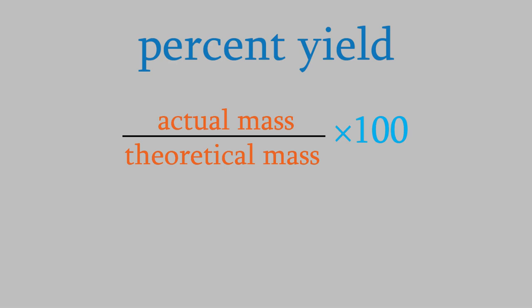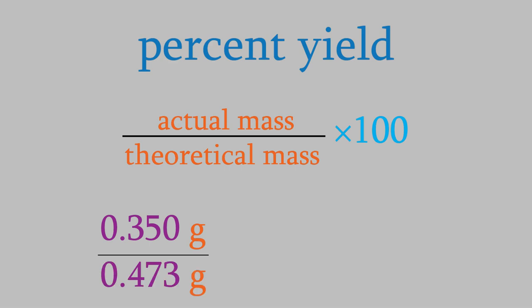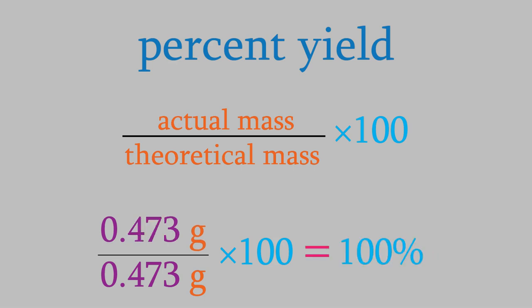In our case, we actually got 0.350 grams, so that's what goes in our numerator. Our calculation earlier showed we could theoretically have gotten 0.473 grams. When we do this calculation, we get 74.0%, so that's our percent yield. If we really had gotten 0.473 grams, then that would have gone in the numerator and we would have gotten a 100% yield. Well, that's it for this video. The calculations you learned about today are some of the most useful and important ones in the entire course. Please feel free to ask if you have any questions, and please come see me if you got stuck. We'll practice these a lot in class and on the homework. Until next time, have a good week!